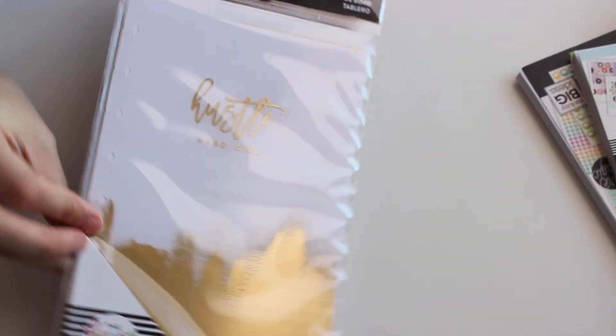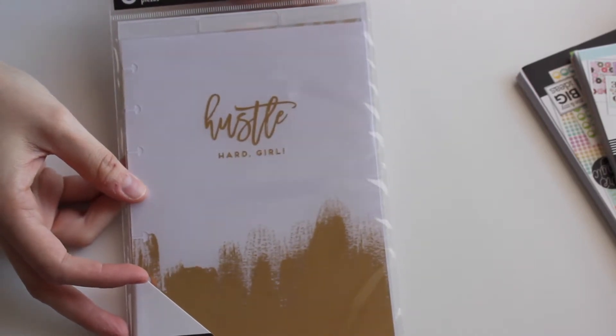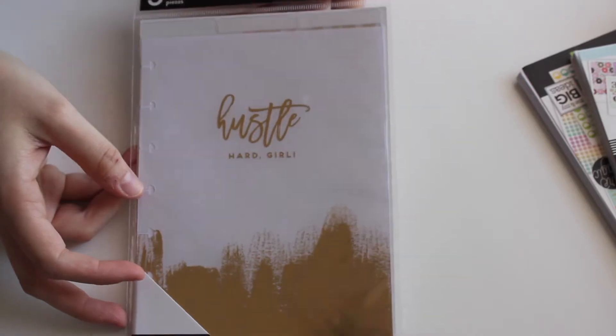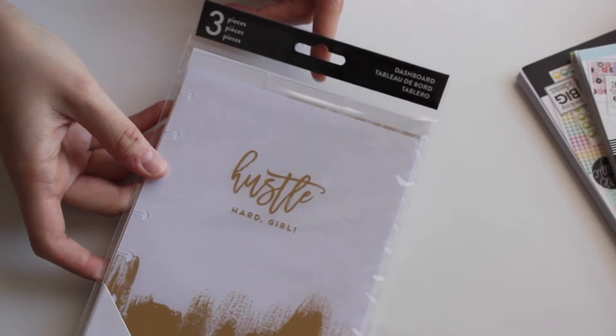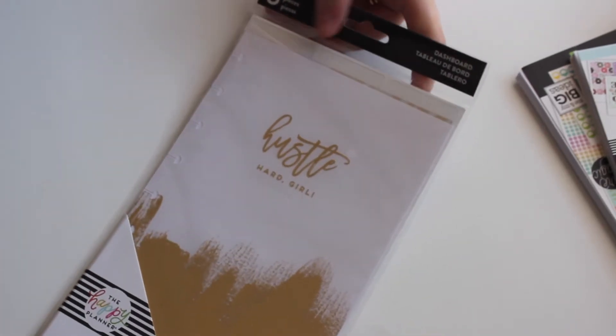I got some more dashboards because I have, I guess I would consider it Frankenplanned my planner this year. But I've split up quite a few sections. And I'm trying to decide whether I want to add my social media planner in there as well, if I even have the space to. I had to get the expander rings.